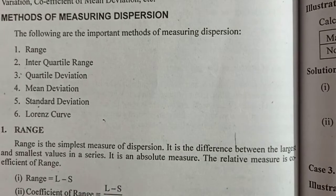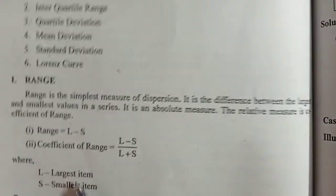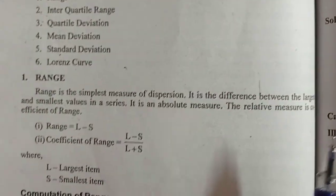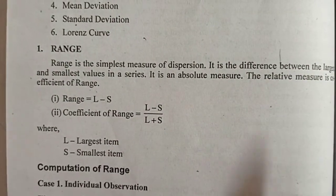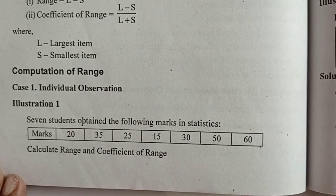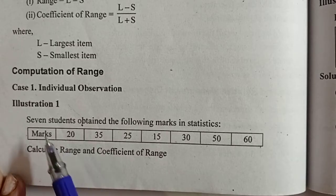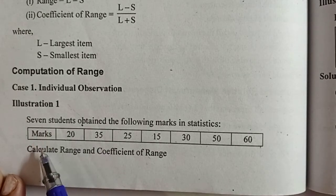The difference is range. L is the largest item and S is the smallest item. Now we can check how we can find the range and the coefficient of range. An illustration example is given.